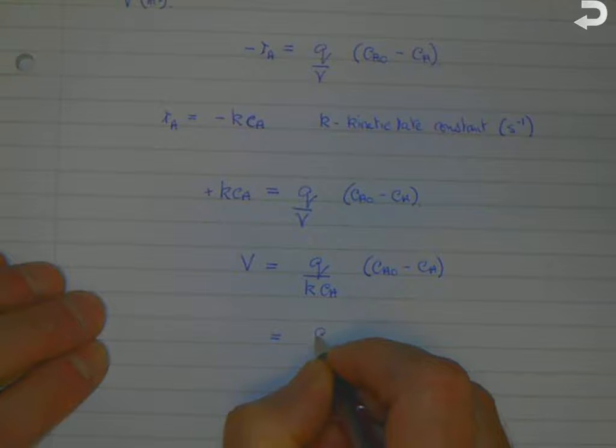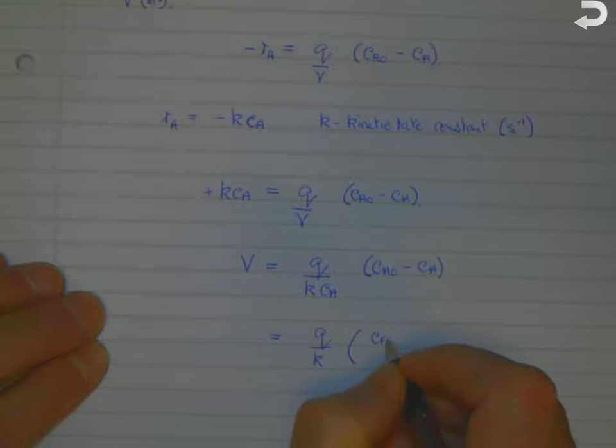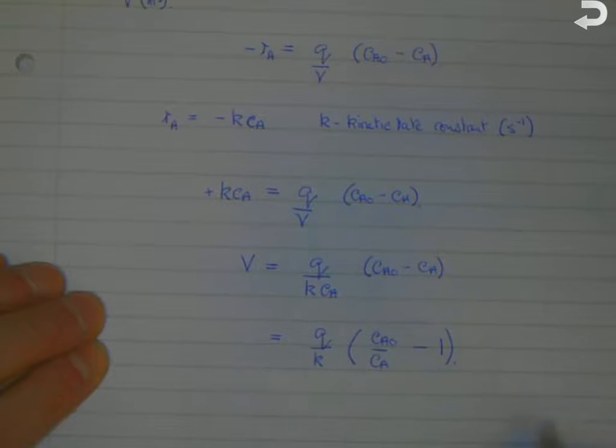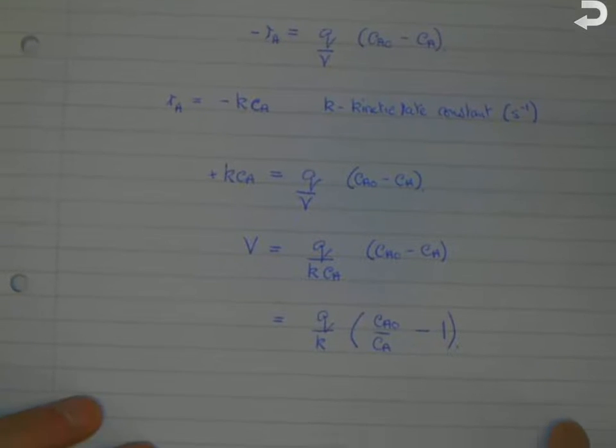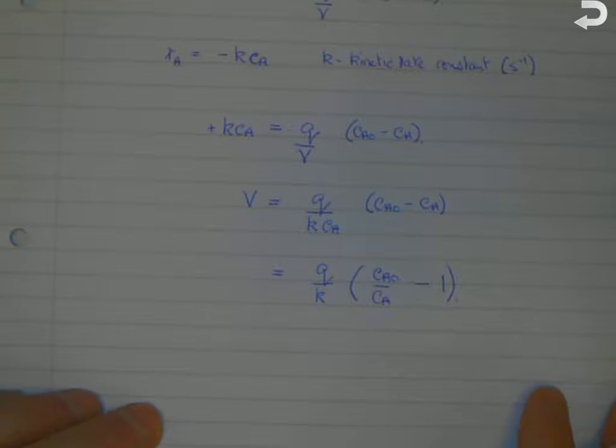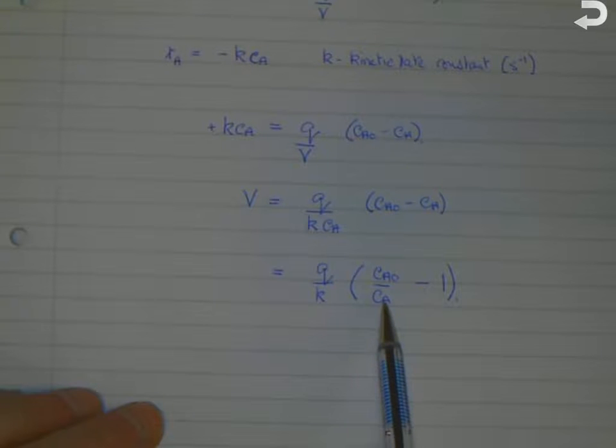That gives us V = (Q/k)(CAo/CA - 1). This is the simplest form for calculating the volume required for a given outlet concentration CA from a starting concentration CAo, with known kinetic rate constant k and volumetric flow rate Q.